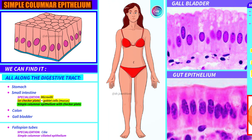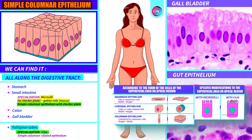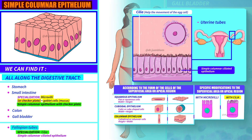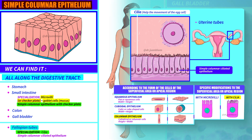We also find simple columnar epithelia in the fallopian tubes. Here, the columnar epithelial cells have cilia as apical specialisations. If we zoom in on the fallopian tubes, we can observe how the cells have short, multiple extensions in the form of tabs that help the egg to move. In this area, we refer to them as simple columnar ciliated epithelium.